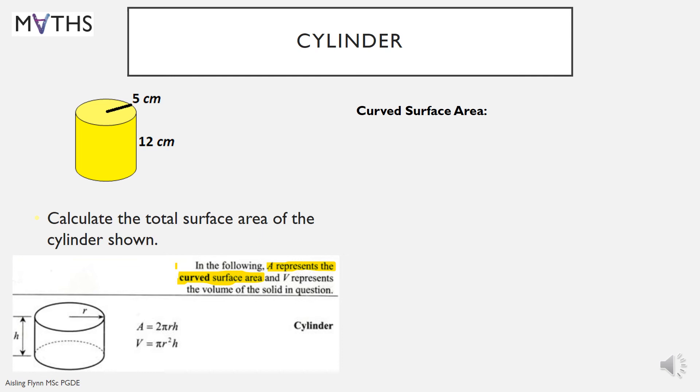So the curved surface area, 2 pi r h is 2 by 3.14 by pi or r. In this case, the radius from our picture is 5 and the height is 12. So calculate that, 376.8. Now you must add in the top and the bottom, which are two circles. So 2 pi r squared. Our radius there is 5. I got 157. So the total surface area, or TSA, you add the two answers and you get 533.8 cm squared.